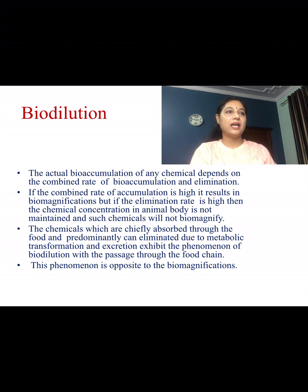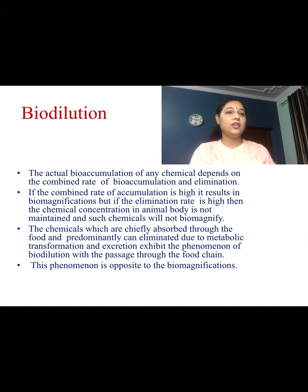Biodilution: the actual bioaccumulation of any chemical depends on the combined rate of bioaccumulation and elimination. If the combined rate of accumulation is high, it results in biomagnification. But if the elimination rate is high, the chemical concentration in the animal body is not maintained and such chemicals will not biomagnify. Chemicals that are chiefly absorbed through food and predominantly eliminated due to metabolic transformation and excretion exhibit the phenomenon of biodilution with passage through the food chain — a phenomenon opposite to biomagnification.